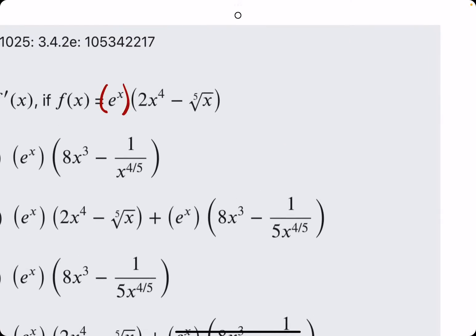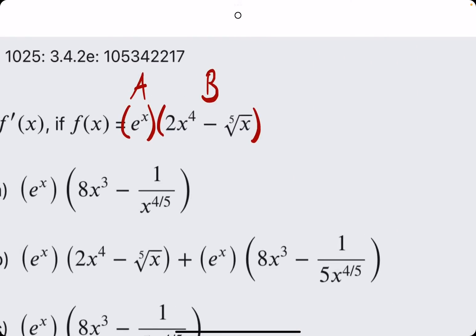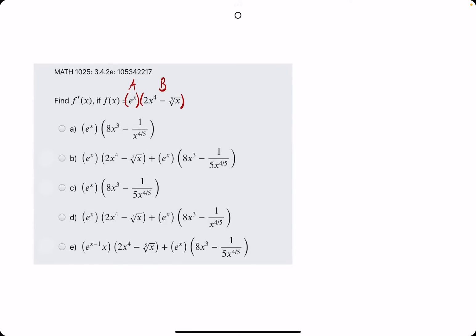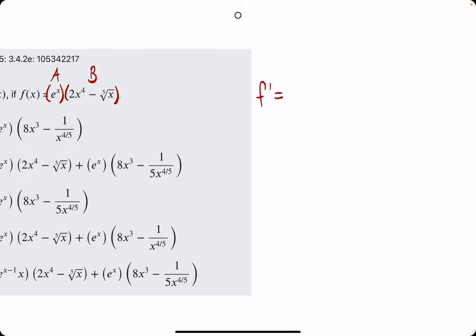In this function, we have an x term being multiplied by another expression with x term. So, the multiplication of these two leads us to use the product rule in order to find the derivative. I'll split this up as A and B, respectively, and then we will just use our product rule.